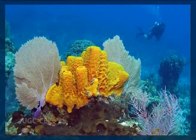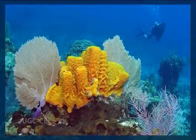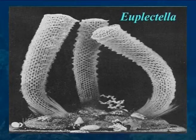Sponges possess the following unique features in which they differ from other animals. These are sedentary, aquatic animals, mostly marine, solitary or colonial multicellular organisms. The body grows in various shapes, mostly plant-like, radially symmetrical or asymmetrical. Some have a definite shape, as an example Euplectella.